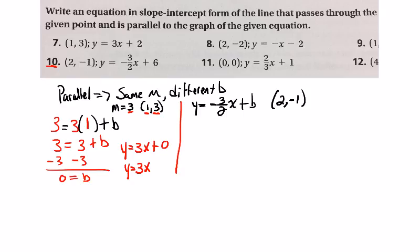So negative one, y is negative one, equals negative three over two times my x value, which is two, plus b.